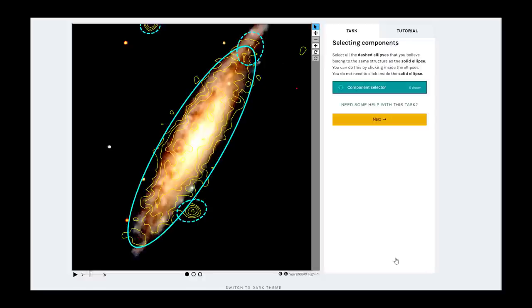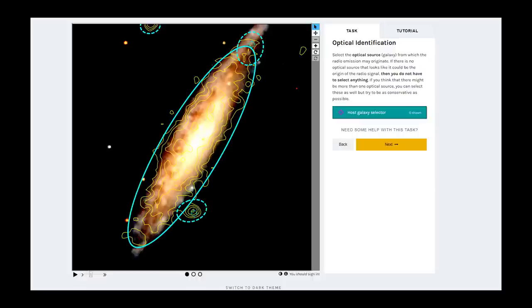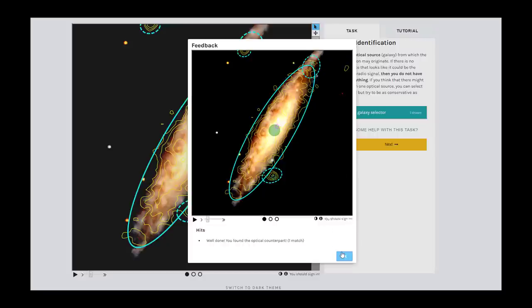While most images in the LOFAR Galaxy Zoo show radio emission coming from a supermassive black hole in a distant galaxy, you might also encounter radio emission from stars and gas in nearby galaxies. Nearby galaxies appear very large and much more detailed in the optical image, and the radio emission usually follows the optical emission closely. The optical host is very easily identified, as it covers almost the entire image here.